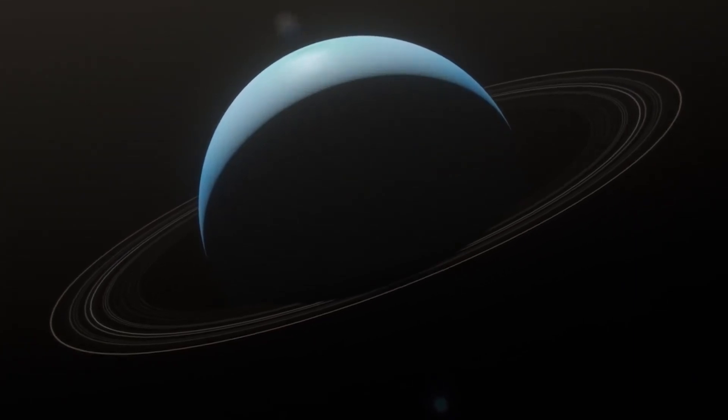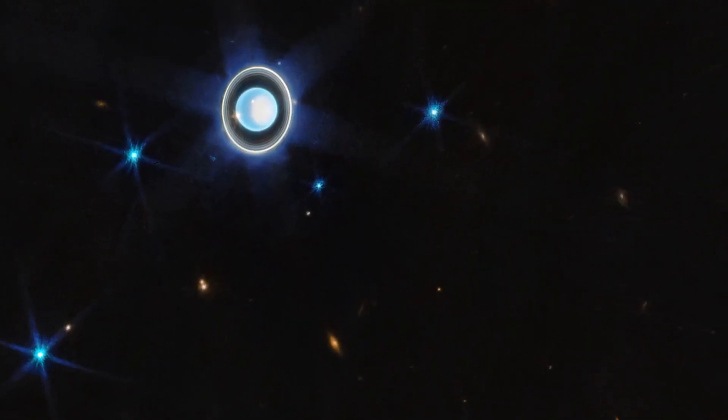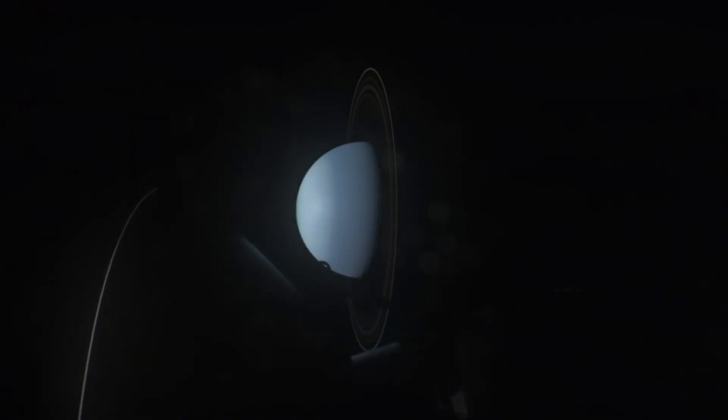A breathtaking view of Uranus taken by the James Webb Space Telescope reveals the ice giant's rings, the brightest moons, and dynamic atmosphere in stunning detail. The most recent discovery came after the magnificent photo of Neptune, the second ice giant in the solar system, taken by the JWST on February 6th. 11 of Uranus' 13 recognized rings are visible in the most recent image of the planet, some of which are so bright that they significantly overlap.